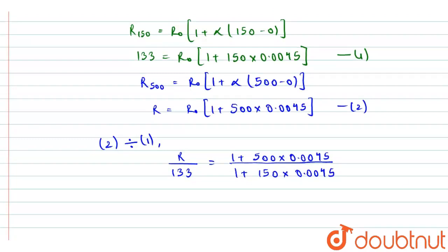So we will have, after solving this, we will get in the numerator 1 plus 2.25 divided by 1 plus 0.675. Further we will get R over 133 equals 3.25 divided by 1.675.